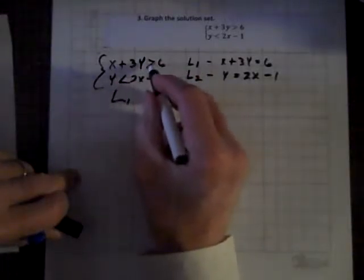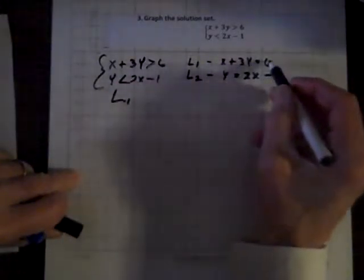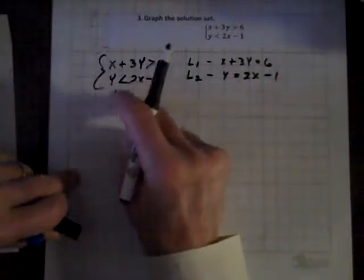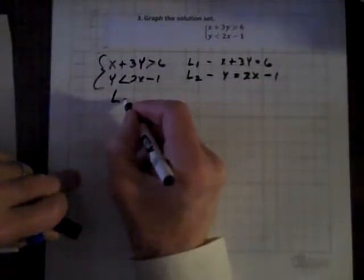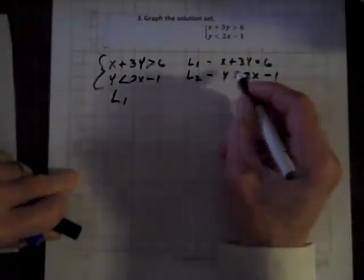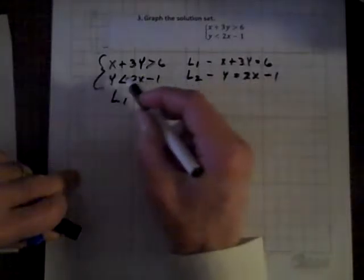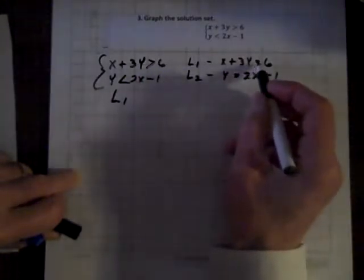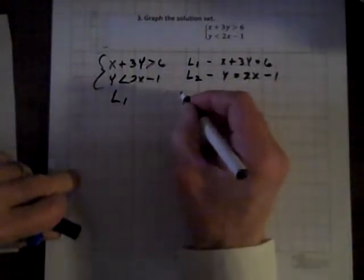And here's the first inequality and the associated line, and we'll call it L sub 1. And here's the second inequality and its associated line. And we'll call it L sub 2. And in each case, I just exchanged an equal sign for the inequality, so L sub 2.